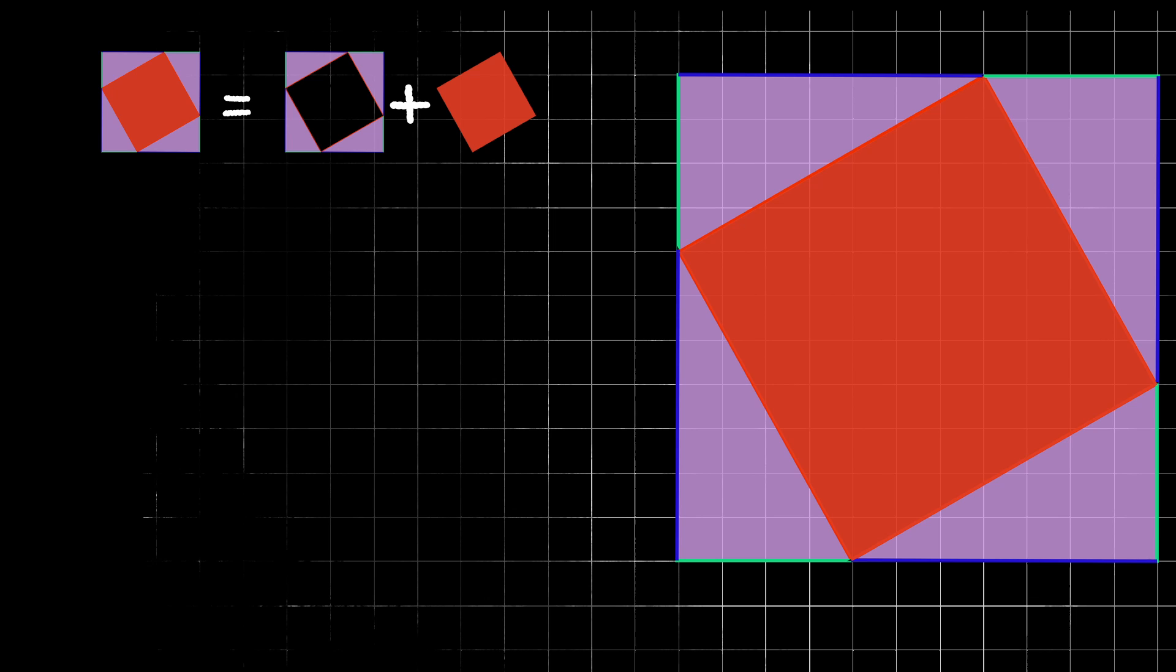So, what is the area of this big square? If you remember earlier, we noticed that the length of each side was a plus b, so the area of this whole square would be a plus b squared.